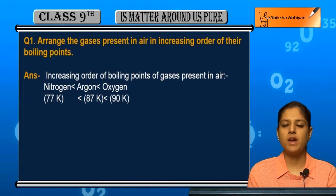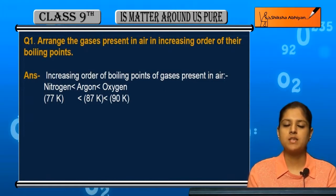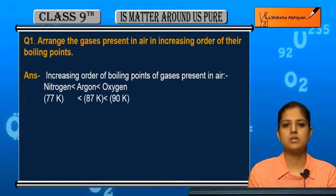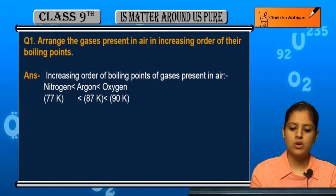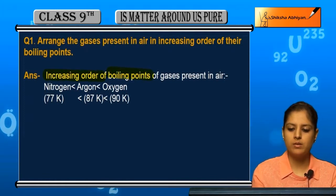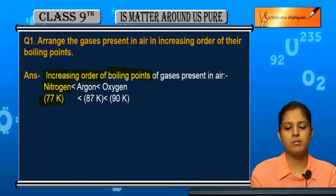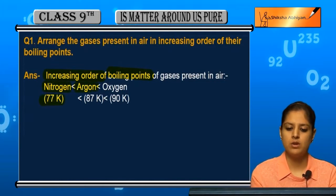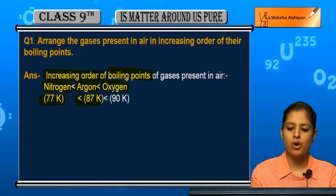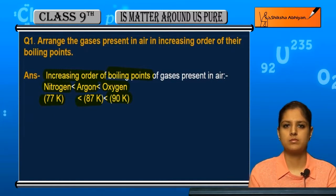So we have to arrange the gases in increasing order of their boiling point. The first boiling point is 77 Kelvin, the second is 87 Kelvin, and the third gas has a boiling point of 90 Kelvin.